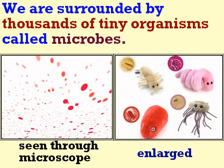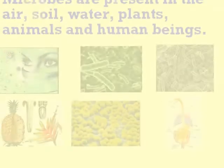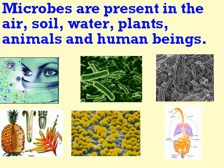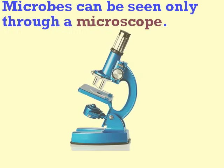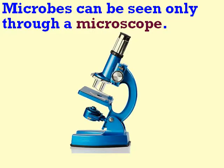We are surrounded by thousands of tiny organisms called microbes. Microbes are present in the air, soil, water, plants, animals and human beings. Microbes can be seen only through a microscope.